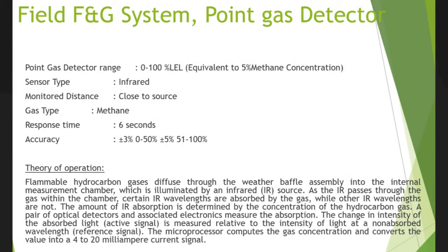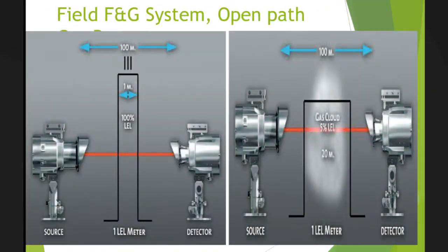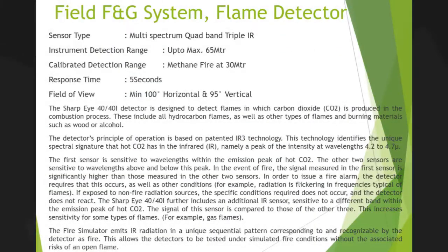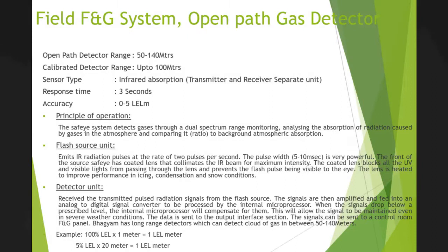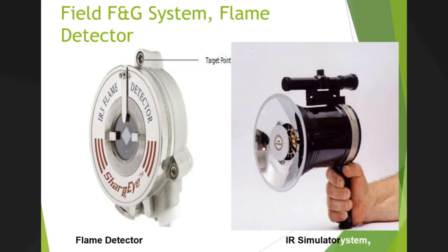At breathing level: equivalent to air density, such as N2. At floor level: heavier than air. The gases in Earth's atmosphere include Nitrogen 78%, Oxygen 21%, Argon 0.93%, Carbon Dioxide 0.038%, Water Vapor, and other gases exist in small amounts as well.